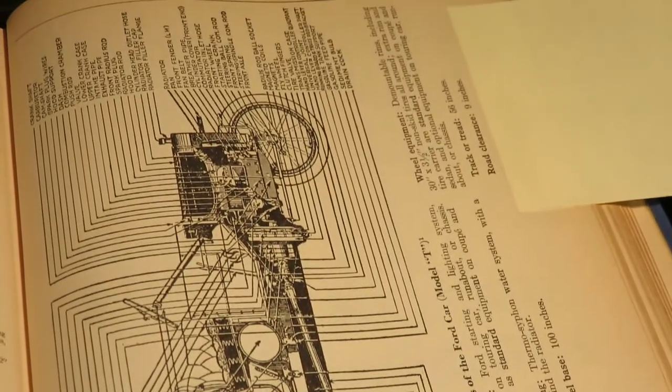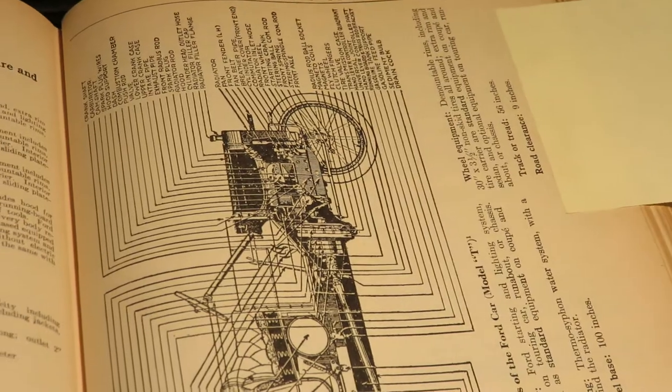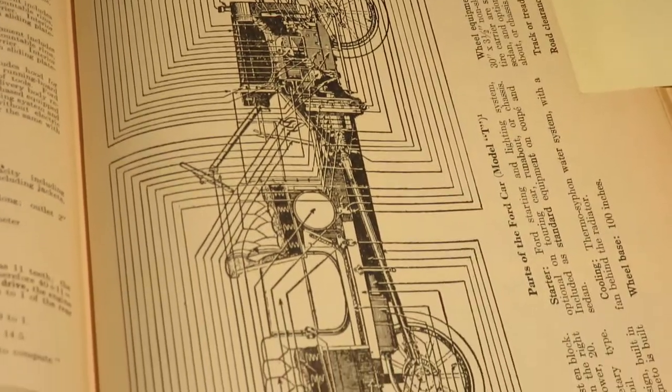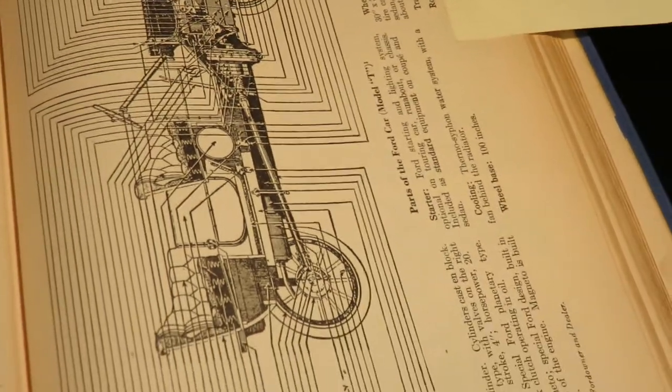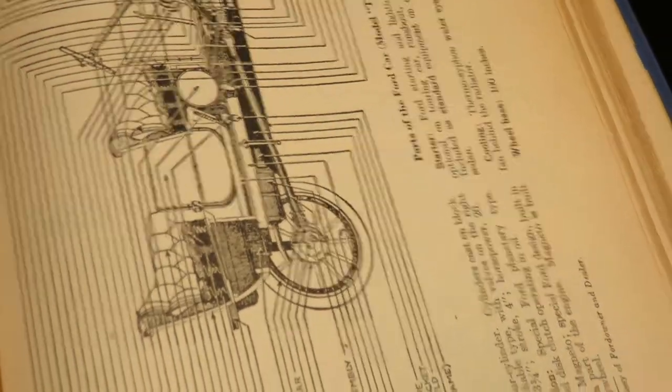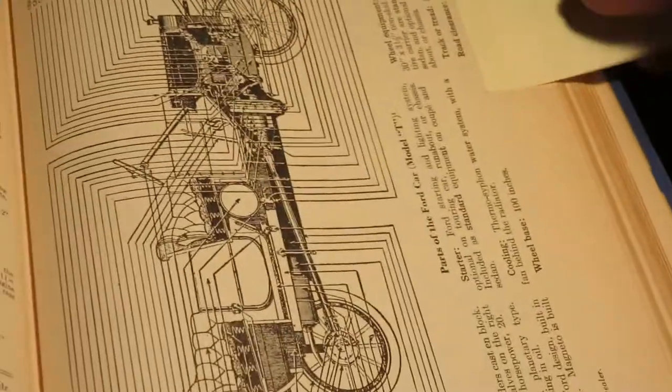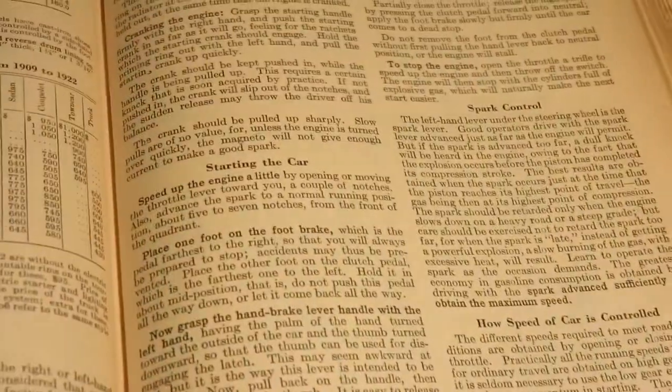And then we have this illustration with a bunch of nomenclature naming every part. And it's for a Ford Model T. There is a pretty good section covering the T.